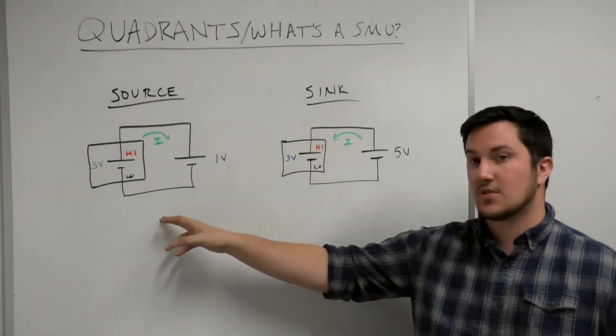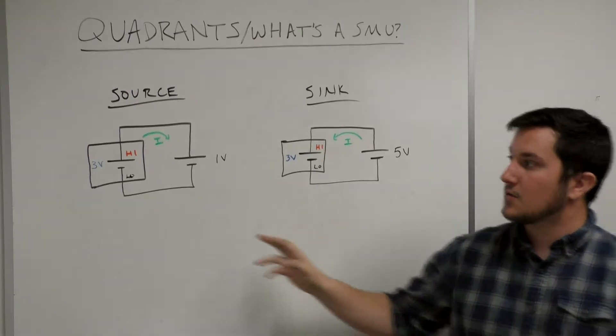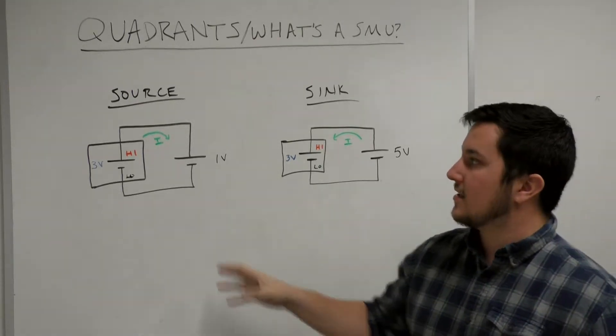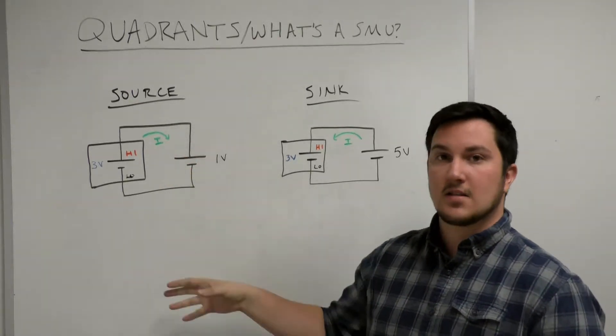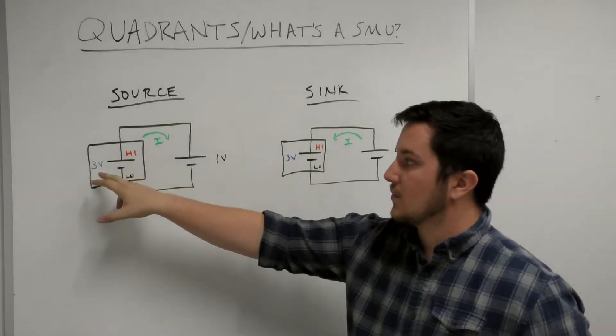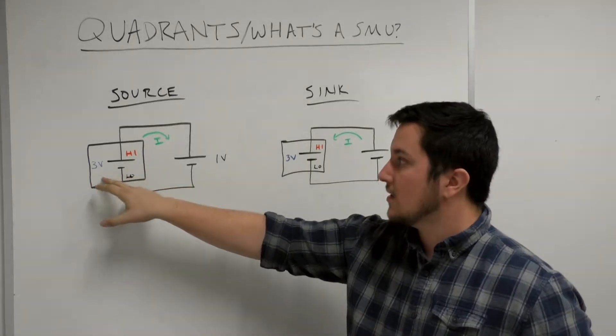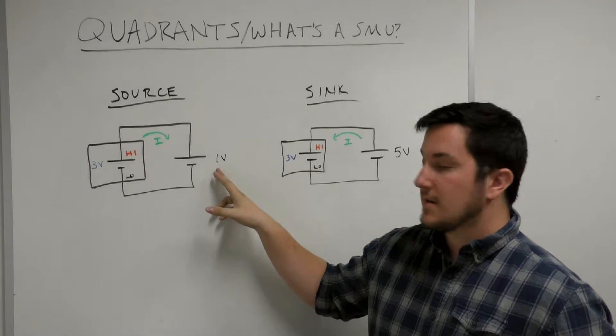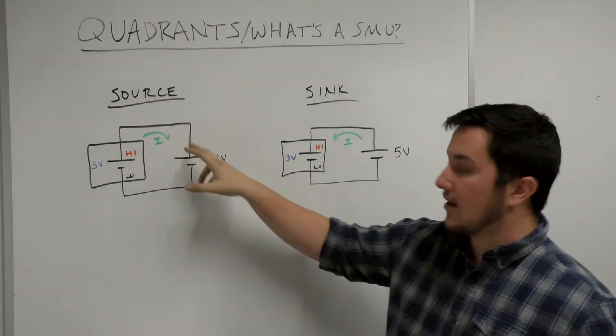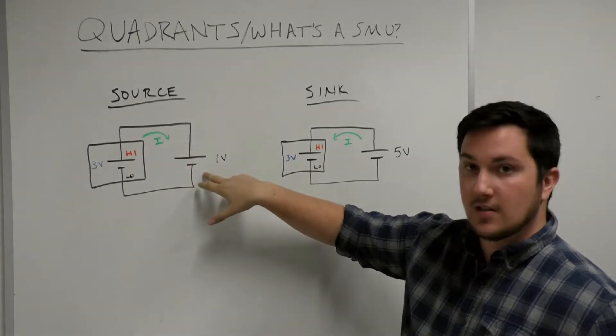First, we need to talk about the difference between sourcing and sinking. When sourcing with an instrument, this means that current is flowing out of the more positive terminal. In our example, we have the instrument sourcing 3 volts into a 1 volt battery. As you can see, current is flowing out of the high and charging the battery.